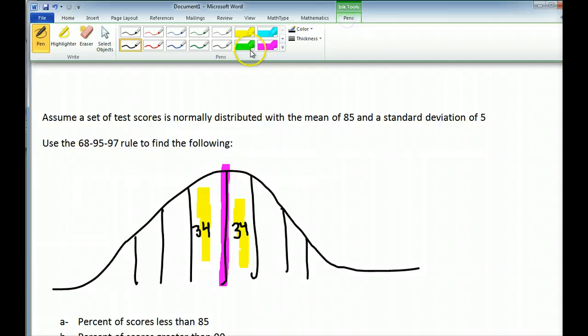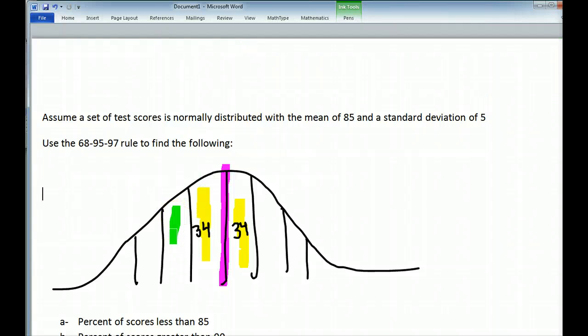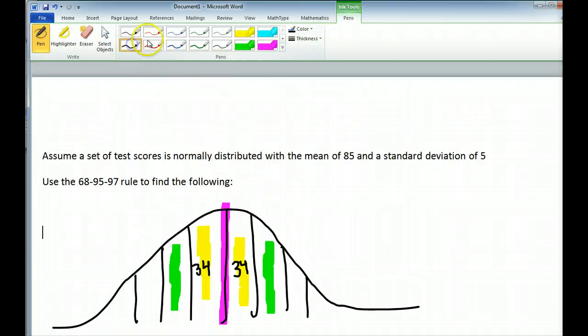Now the next thing we can look at is two standard deviations from the mean. 95% of data falls within two standard deviations of the mean. But you have to remember we've already considered 68% with the yellow bars. So 95% minus 68 means we're adding an additional 27% or 13.5 on each side.